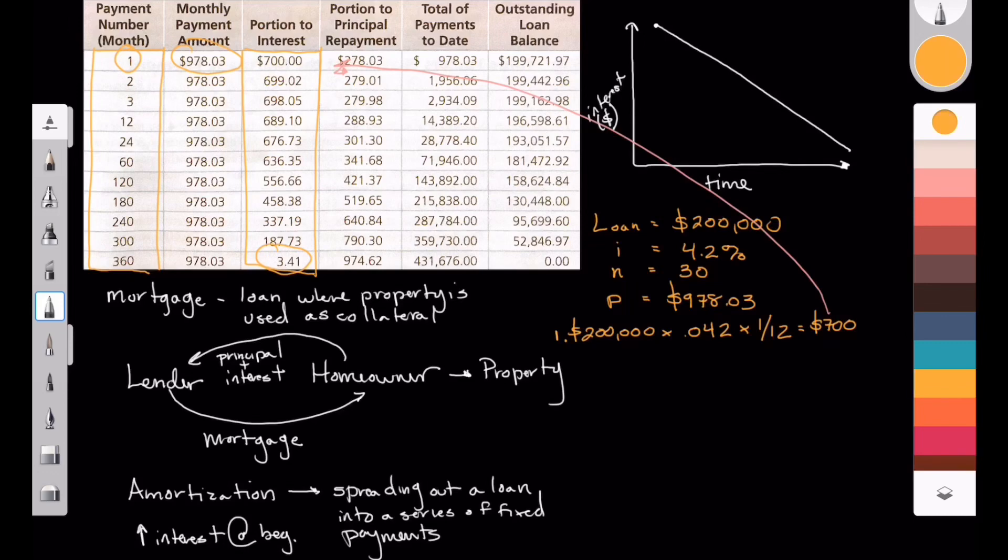So when you take that amount and you subtract it from our original or our actual monthly payment, which is the $978.03, you get a remainder of $278.03. This here represents the amount of money that's being applied to our principal. So when you look at the following month, notice that we now have an outstanding balance of $199,721.93.